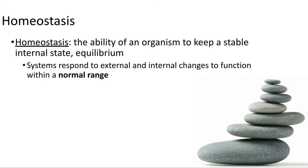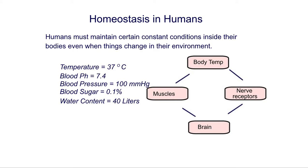What are some things that humans need to keep in a normal range? We discussed temperature — the normal human body temperature is 98.6 degrees Fahrenheit, which is roughly 37 degrees Celsius. Once our temperature starts to climb, we reach what's known as a fever, and if our body temperature goes too low, we run the risk of hypothermia. Our body systems work best at 37 degrees Celsius.